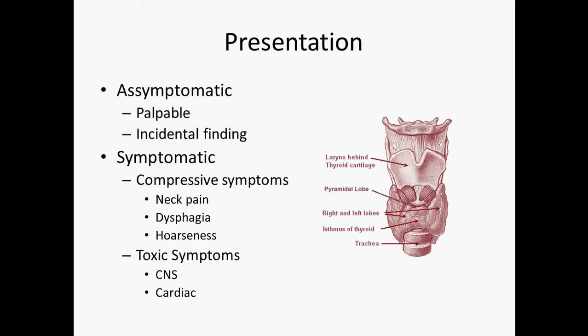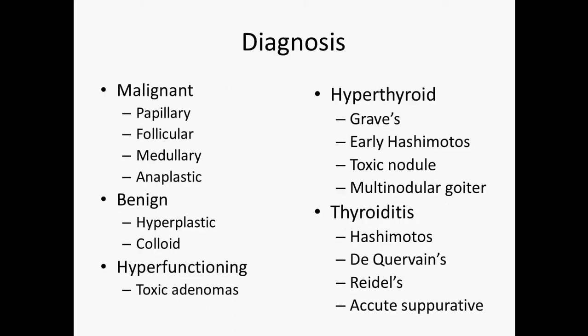There are some symptomatic thyroid nodules. The symptoms come in two forms: either compressive symptoms, where the size of the mass compresses the esophagus or the airway — causing neck pain, problems swallowing, and hoarseness — or these thyroid nodules can be hormone-producing, causing CNS effects of increased thyroid hormone as well as cardiac effects like tachycardia.